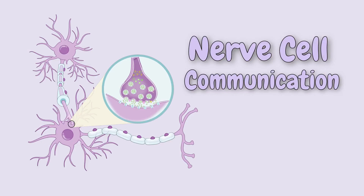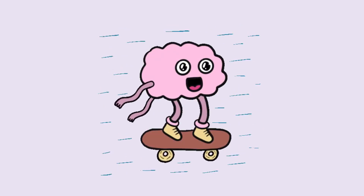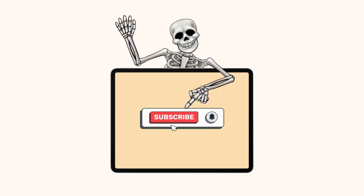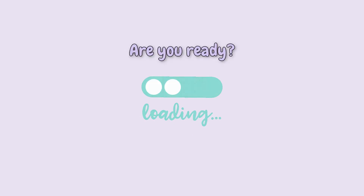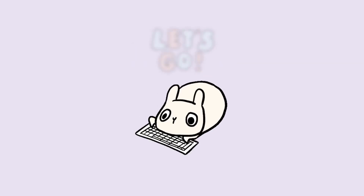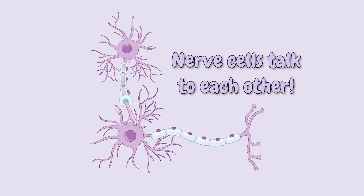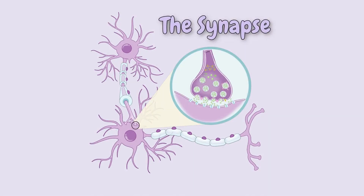Nerve cell communication. Nerve cells talk to each other at a specialized structure called the synapse. First things first, there are two types of synapses.